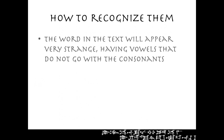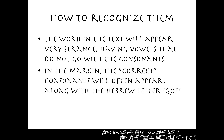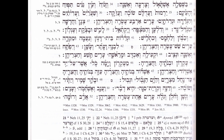So how does this play out in the Hebrew Bible? The word in the text will appear very strange, like our word 'phronic,' having vowels that do not seem to go with the consonants. That tells you to go out to the margin where the correct consonants — at least what the scribe considers correct — will often appear, along with the Hebrew letter Qof underneath it. Qof is the first letter of the word 'kere,' so the scribe is telling you: read these letters.